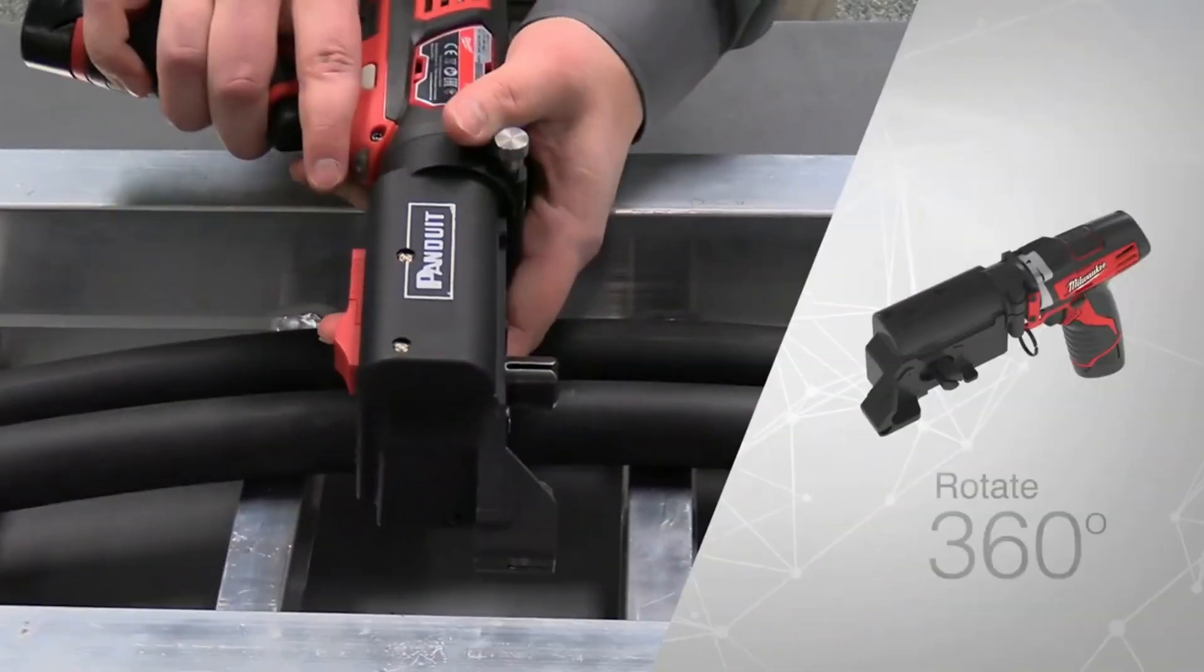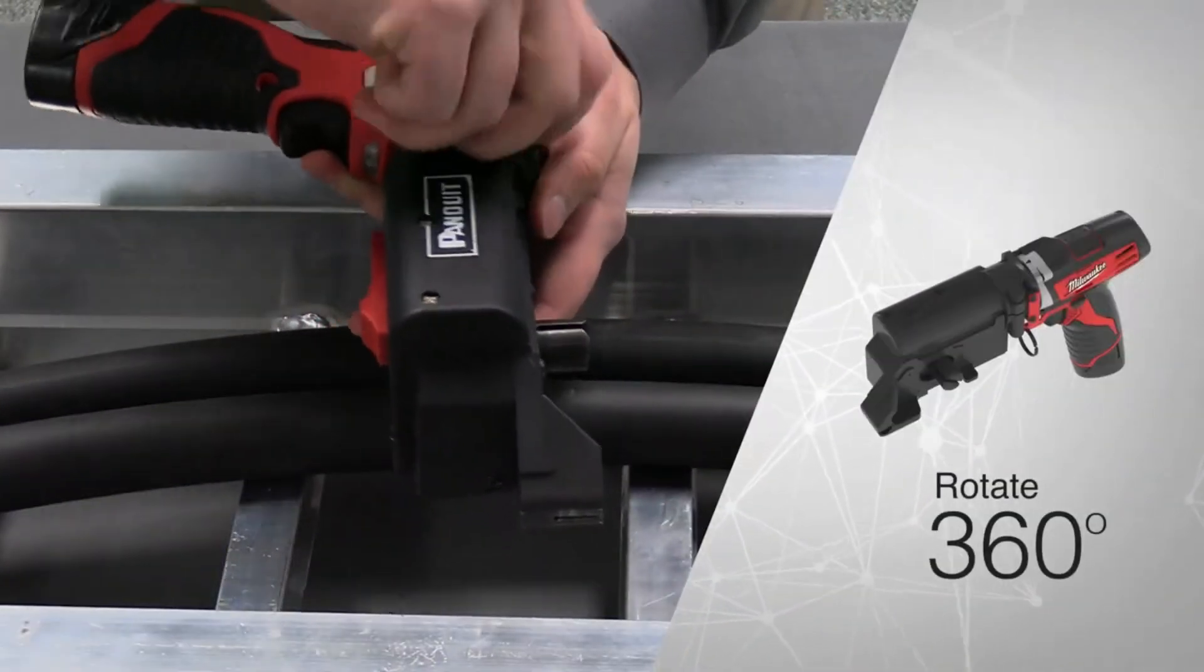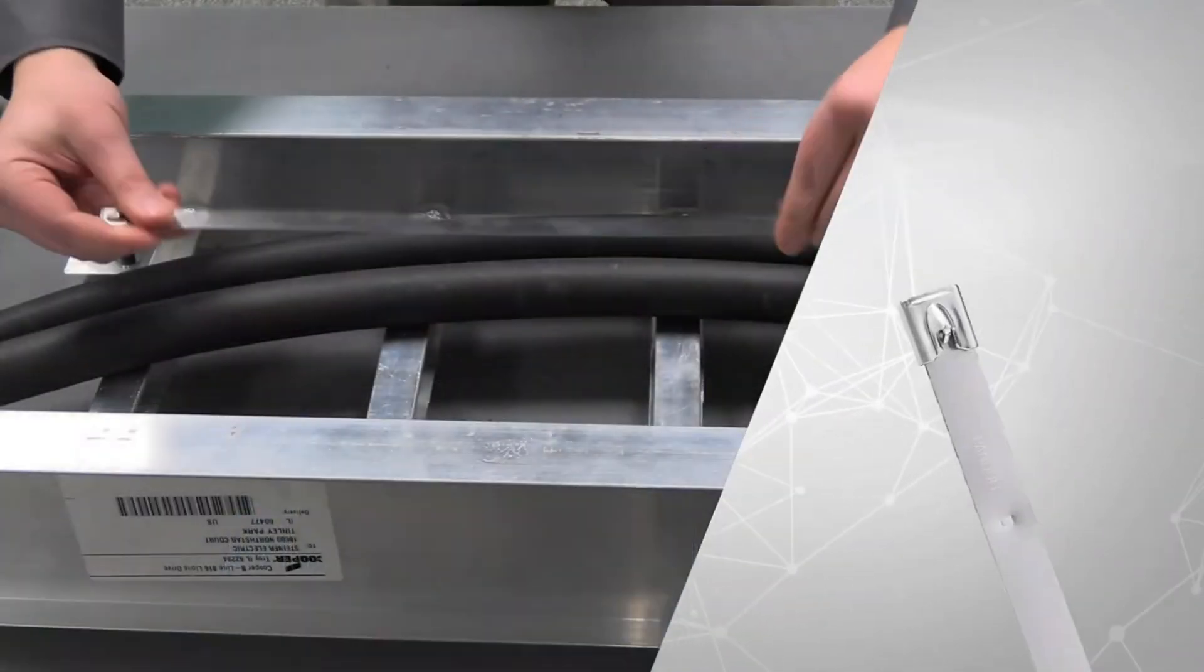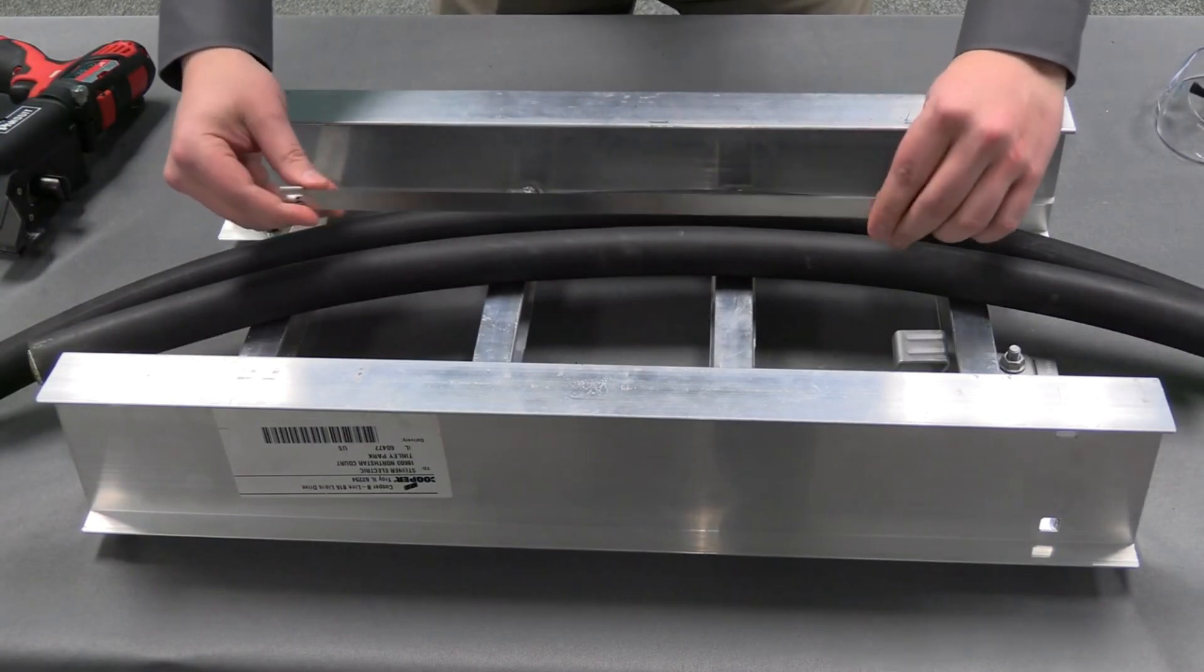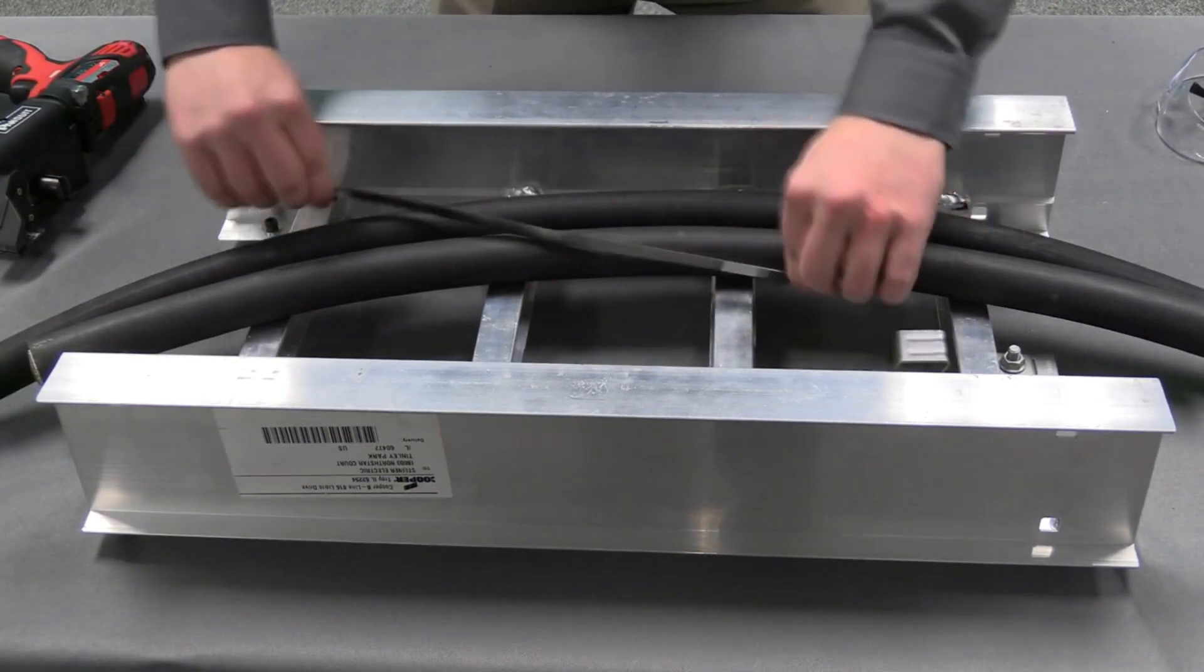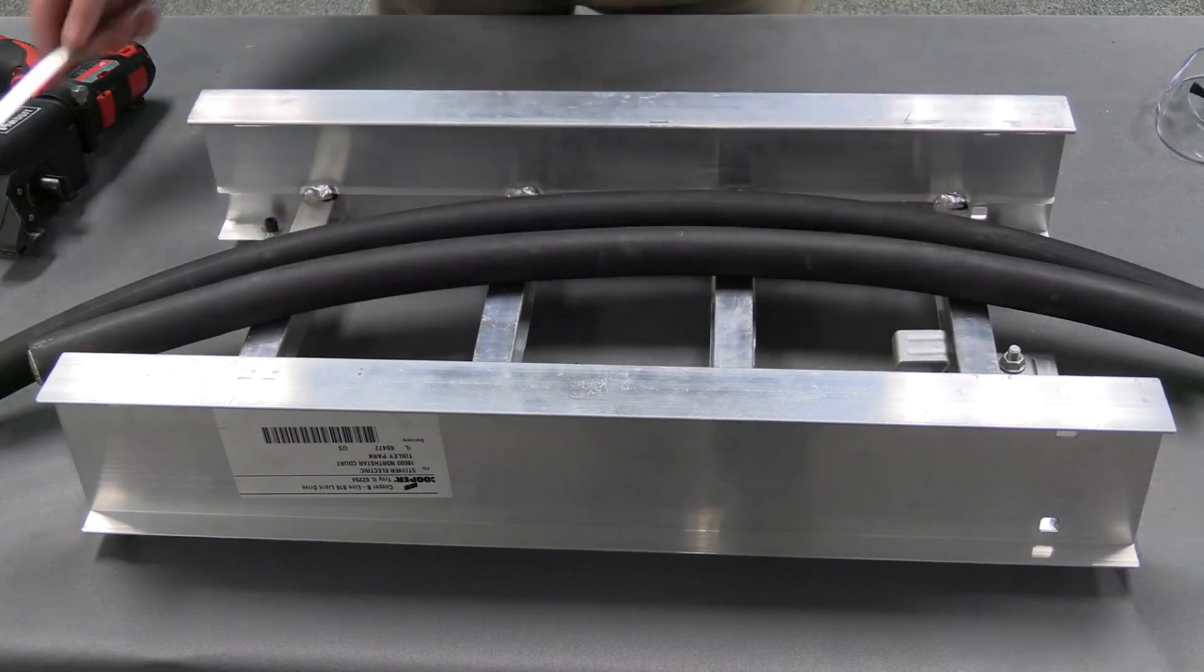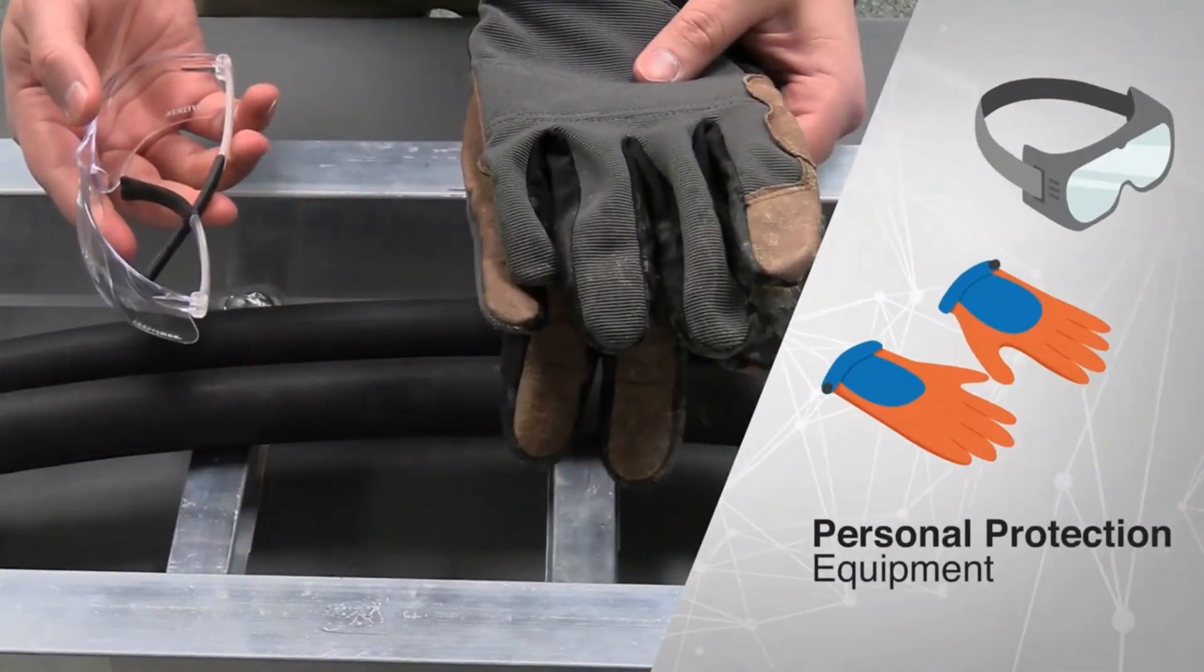Another great thing about the tool is that the head rotates to get into tight application spaces. Go ahead and lock that down. We're going to be installing, as I mentioned, MLT EHs today. They've got the same rounded edges as their standard and heavy counterparts which protect the installer but also the cable bundle itself. And even though we might not need it, we're going to wear some PPE too.